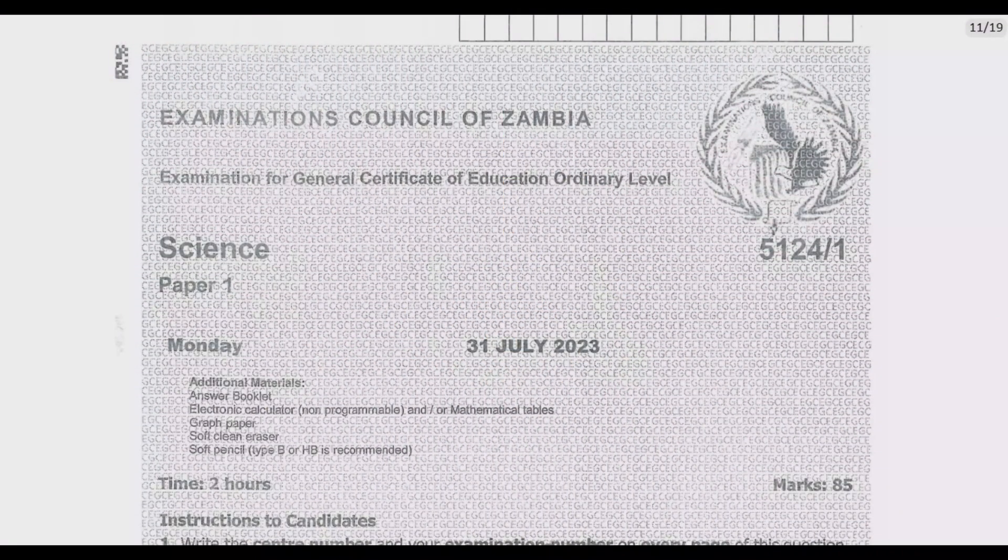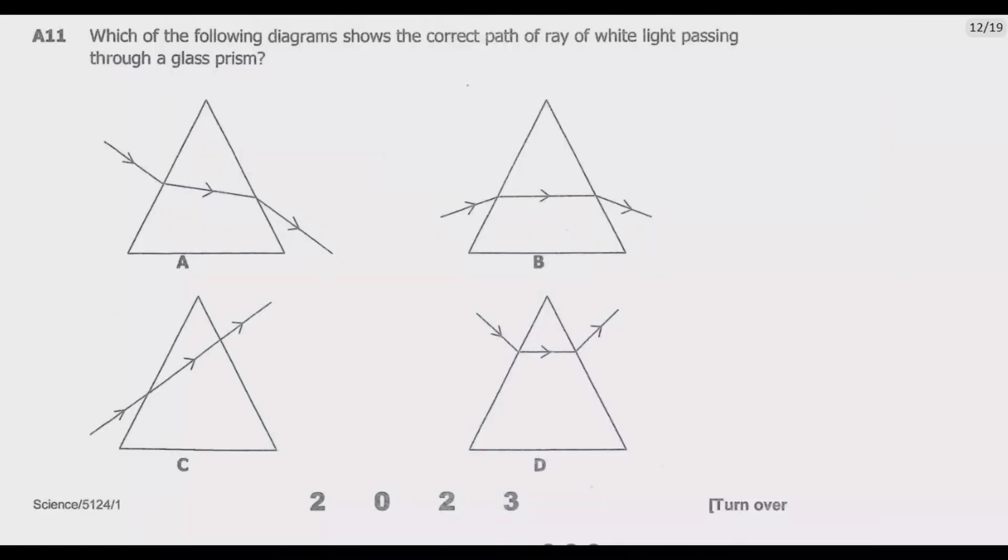Welcome viewers to the third episode in a series focused on the detailed division of the 2023 GCE Science Paper 1. In the previous two episodes we covered questions 1 through 10. If you are new to this channel consider subscribing so that you get notifications, and if you find this video helpful consider liking to help my channel improve its visibility.